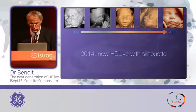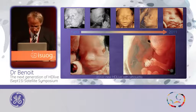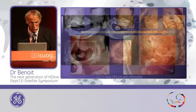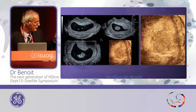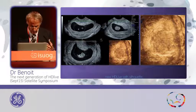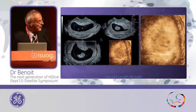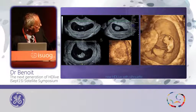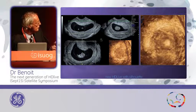What is this new HDLive with silhouette? It is this — you can obtain this kind of rendering. I will show you how to use it first on an early pregnancy with a gestational sac. This is a gestational sac with the embryo inside. You put a box around the gestational sac. When you move inside, this is classic surface rendering. It's quite difficult — sometimes you have to use a magic cut.